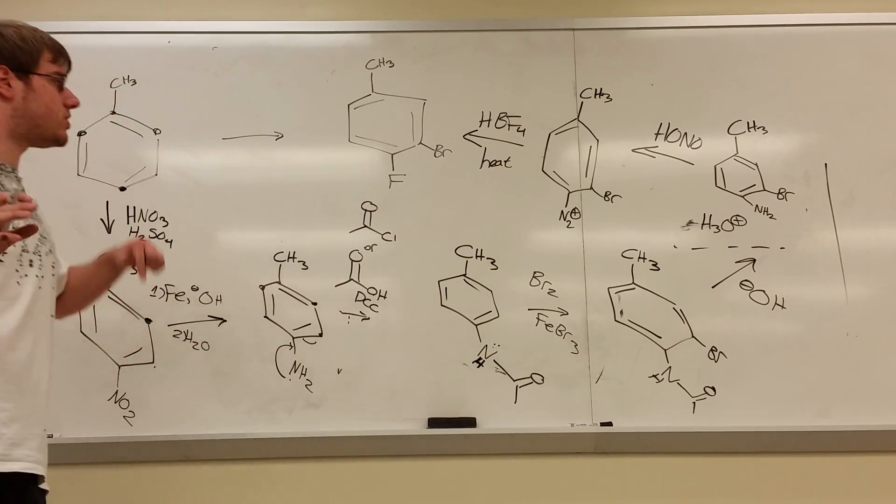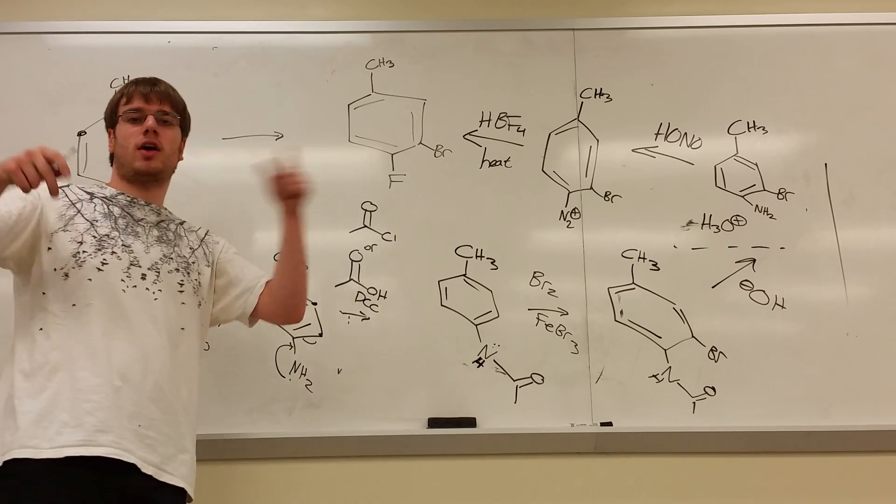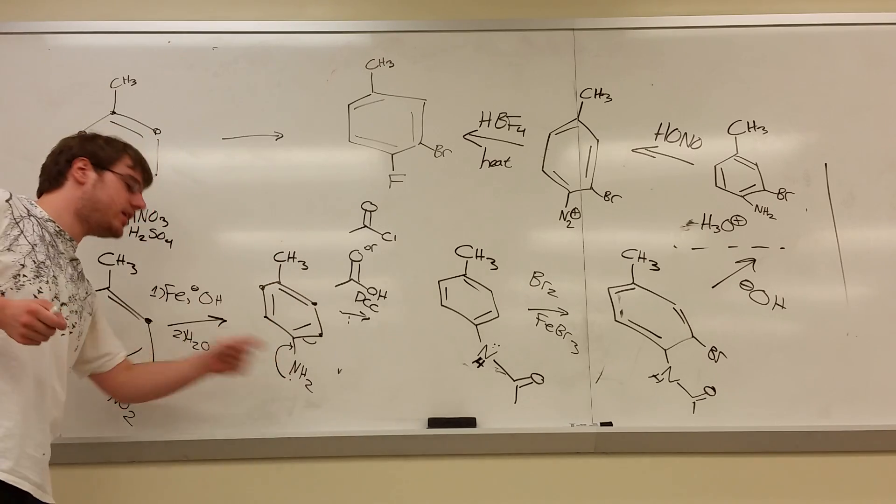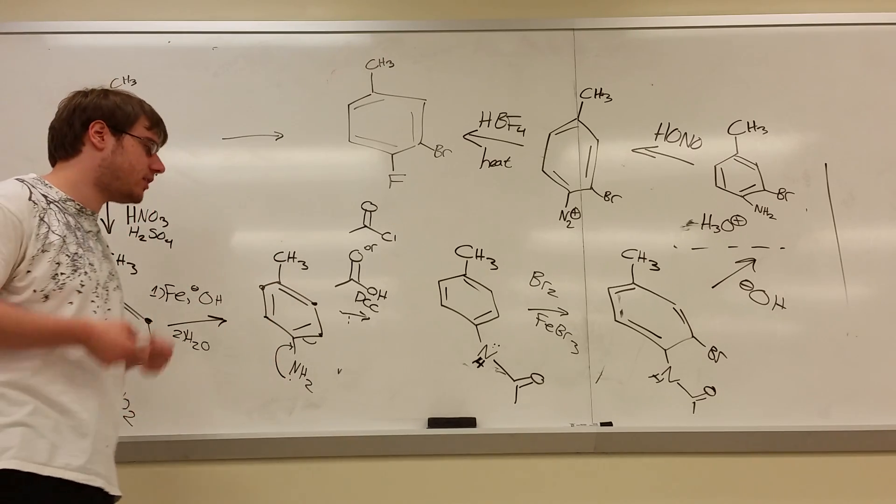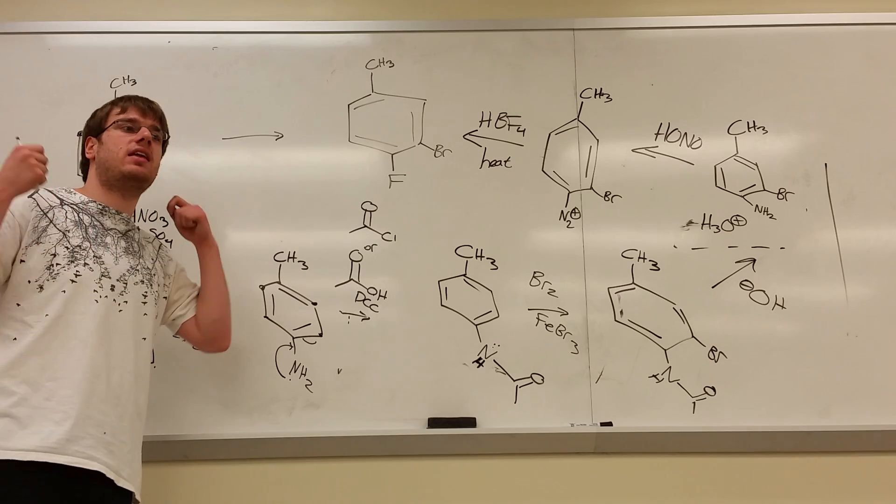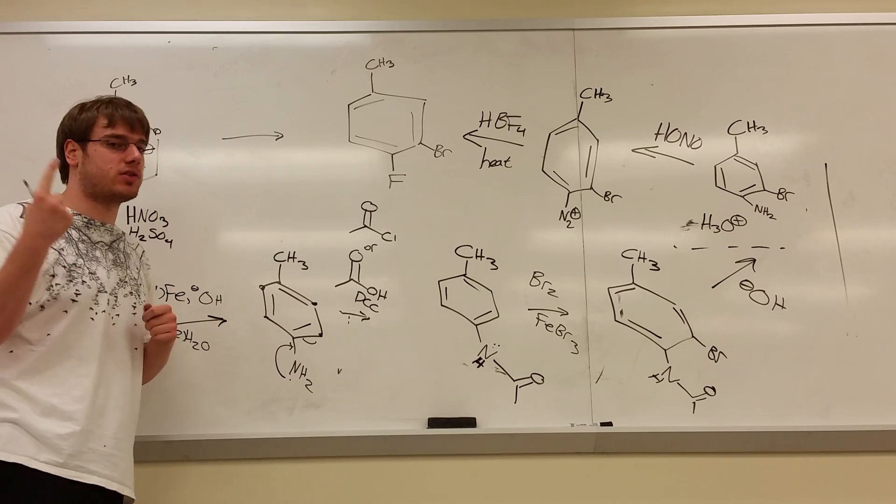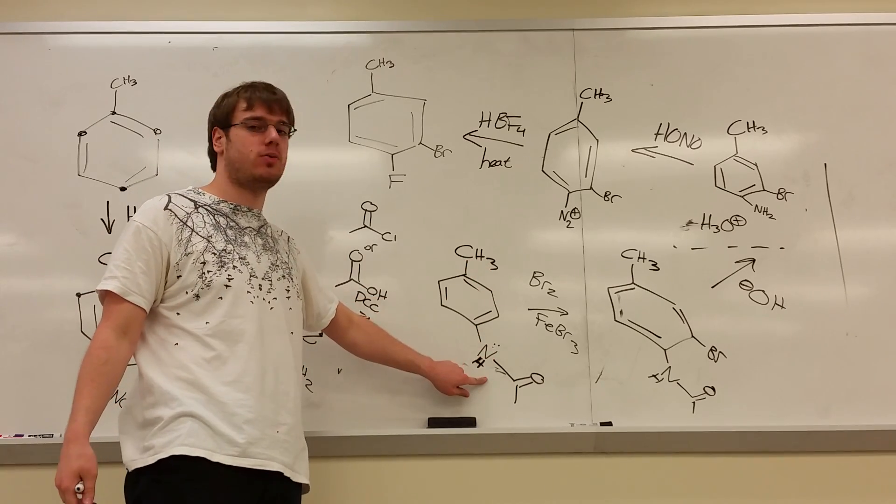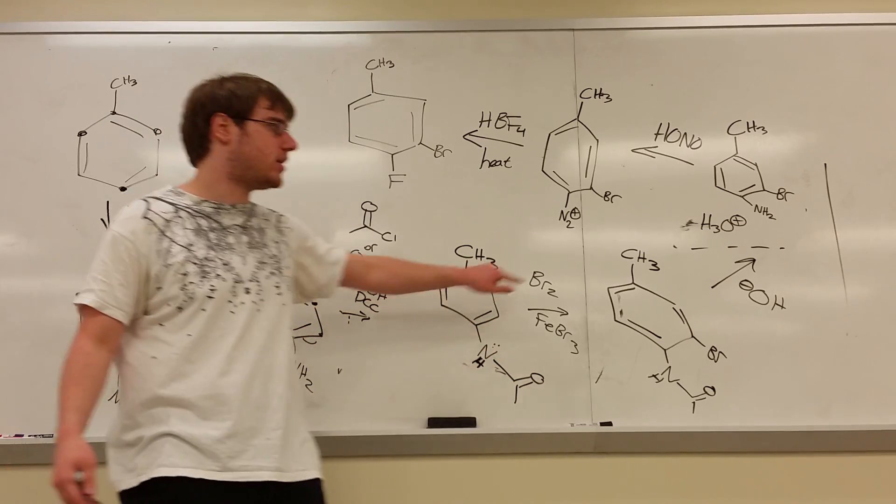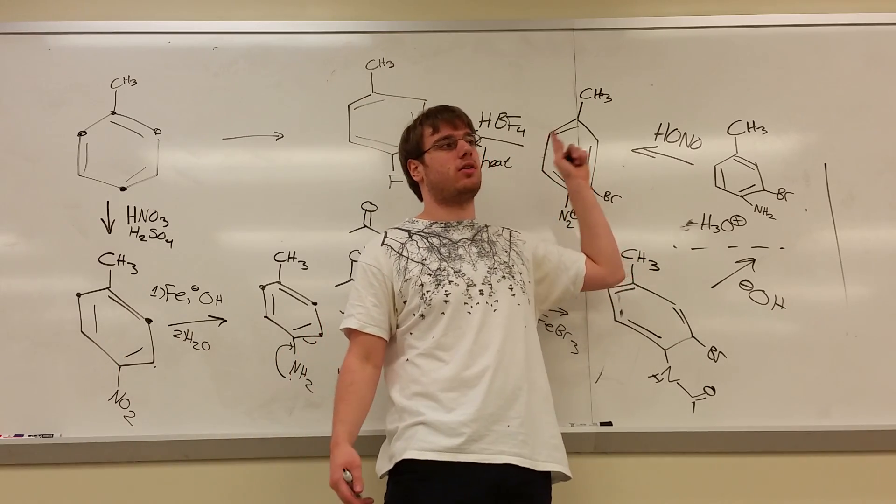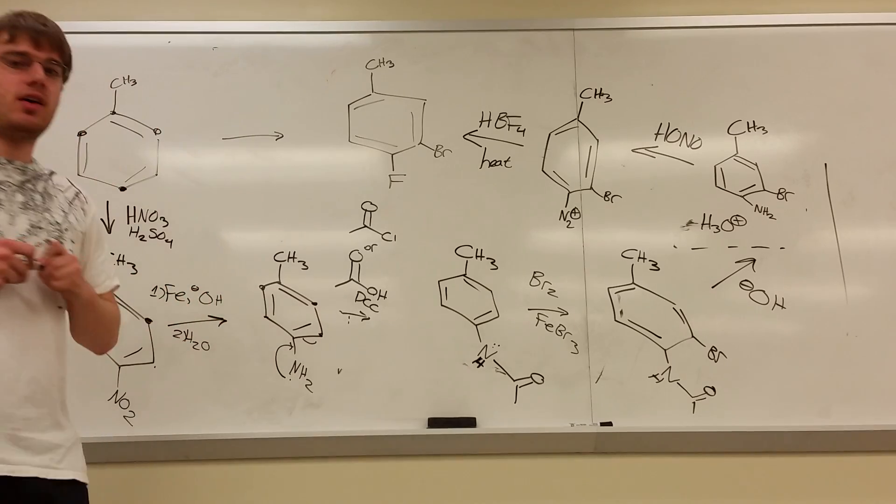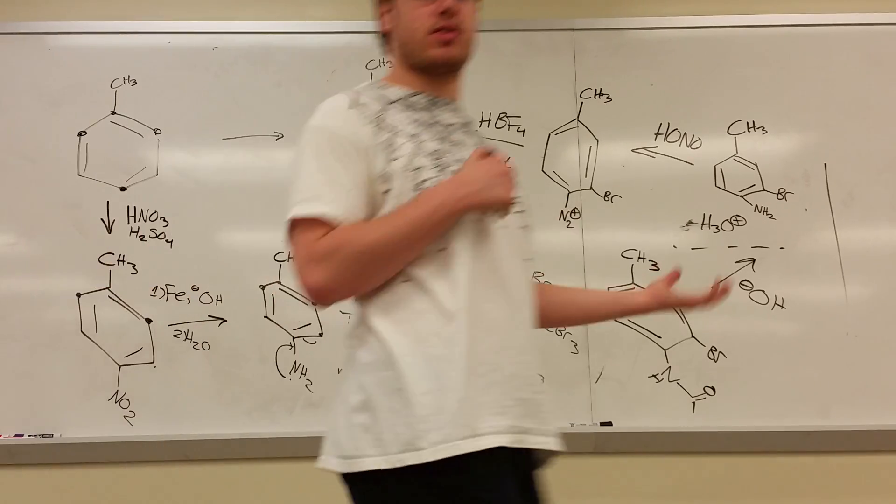So that's the general gist of this synthesis. Always keep in mind who directs where, the order of events, and remember the very important fact that NH2 is such a powerful donating group, such a powerful director, that it adds a lot to the benzene. It doesn't stop at one thing. So you have to, absolutely have to, turn it into an amide if you want to add other groups before turning it into the NH2 or the N2 positive. And so that's the general idea of chapter 20 benzene syntheses. Thank you.